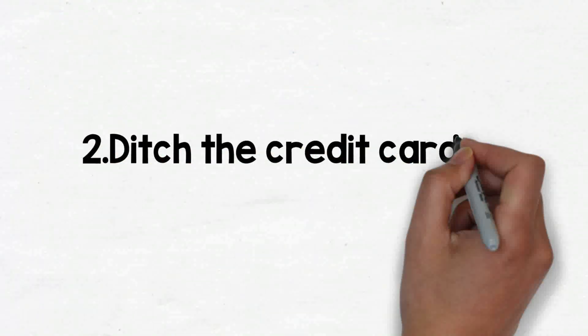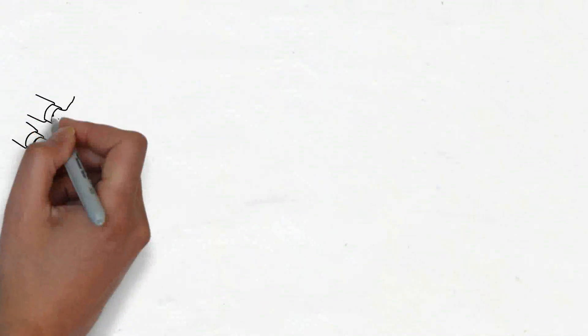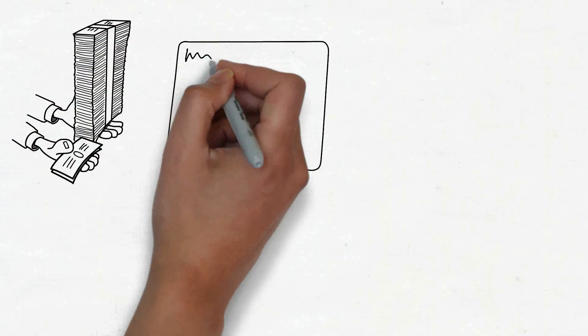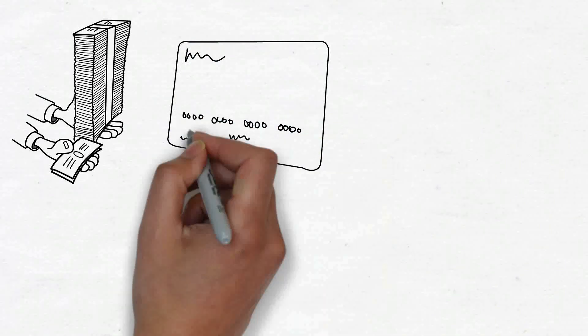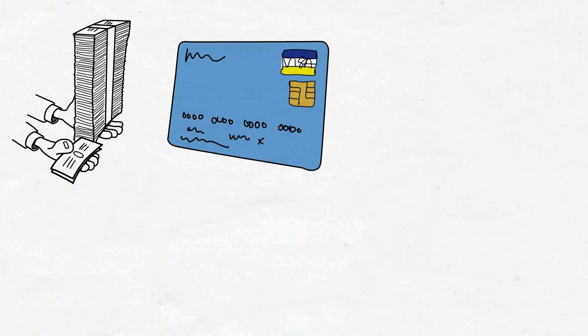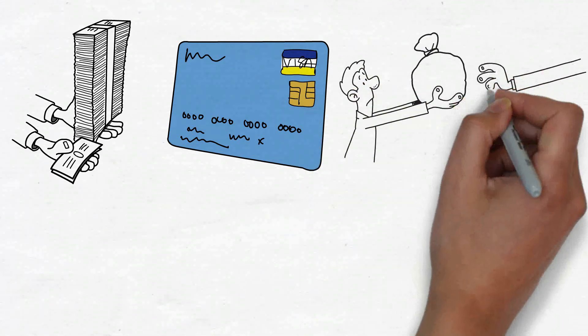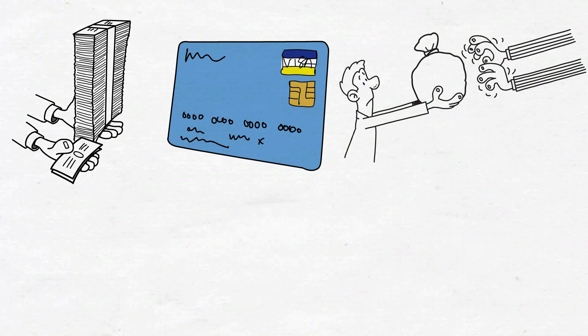2. Ditch the credit cards. You wind up spending even more than the previously indicated average monthly payment of $276 if you charge those impulse purchases to a credit card and don't pay off the debt. Why? Because you'll also be paying that typical credit card interest rate.